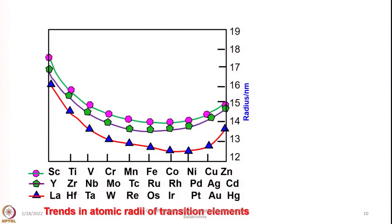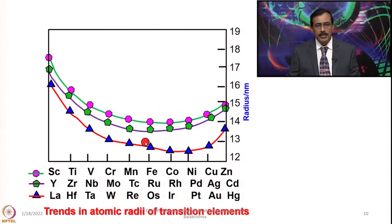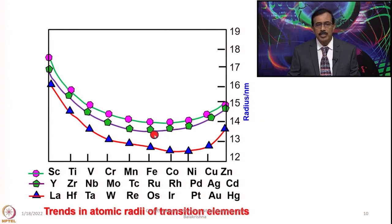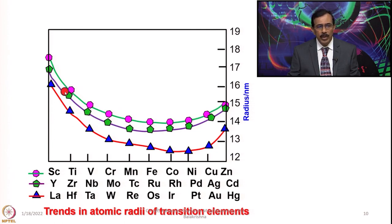We can see the trends in atomic radii of transition elements: the atomic radii decrease steadily until manganese and iron, and then slowly increase. As more and more electrons are added to the same shell, effective nuclear charge increases, pulling valence electrons more towards the nucleus and decreasing the radii. But once the D shell is half-filled and you add more electrons (D6, D7, D8), interelectronic repulsion causes the size to increase. The trends are very comparable among the 3D, 4D, and 5D series.